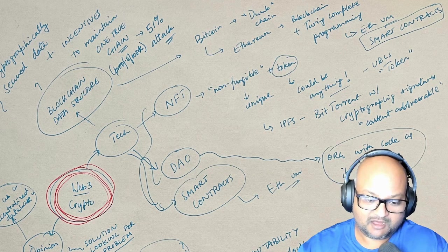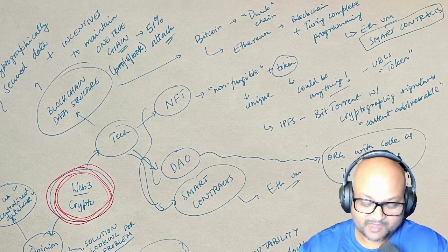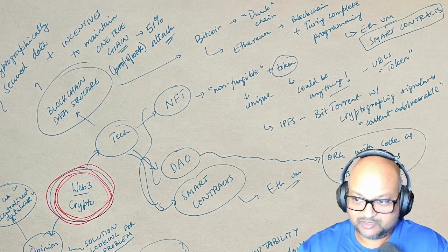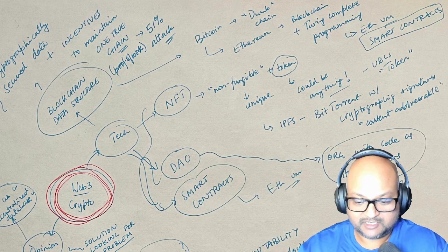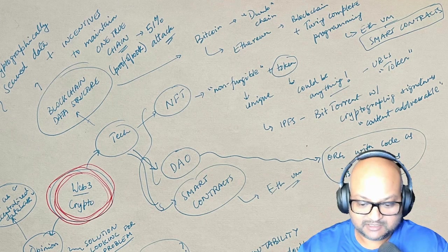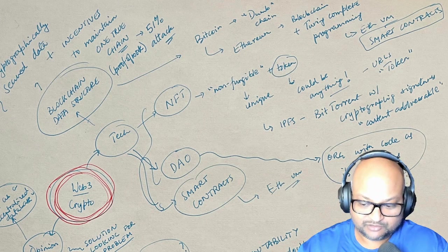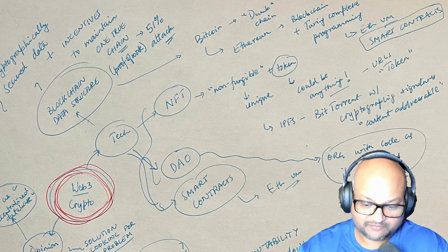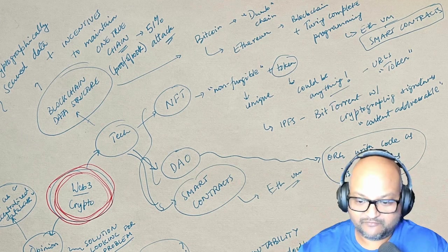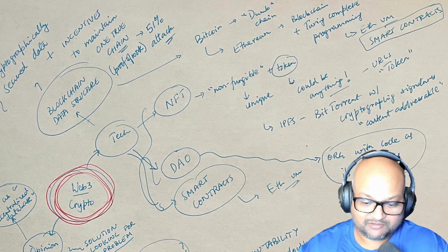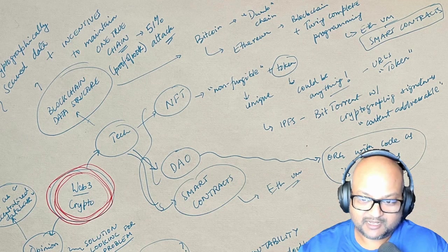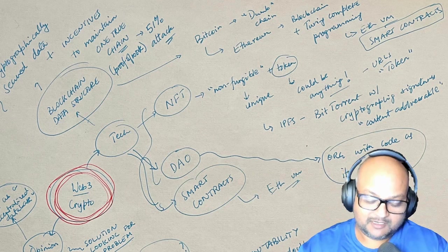Decentralized Autonomous Organizations. One could, for example, code up the rules governing an organization. How you make decisions, how you spend resources within the organization. You could define who the members of that organization, how they vote to spend its resources, and so on. And you can write all this up in code and have the Ethereum blockchain execute it.